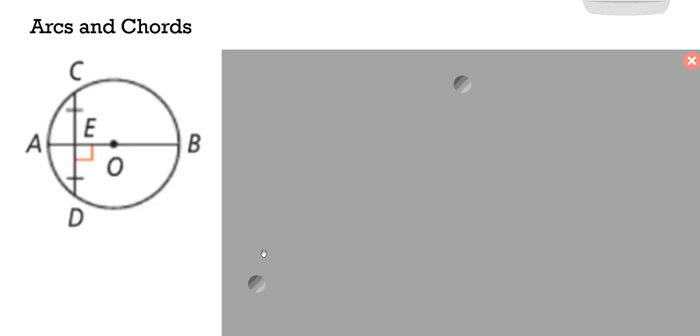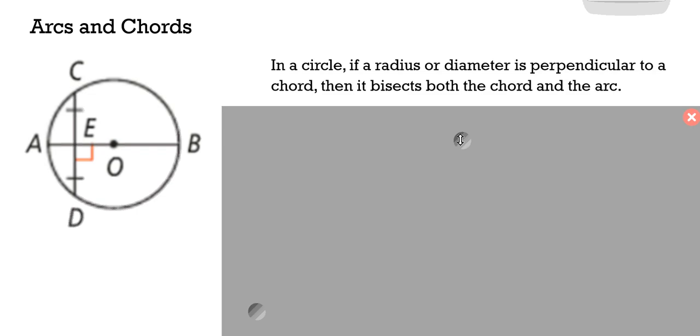When we're looking at this here, we've got a diameter AB and a chord CD. The diameter is a chord as well because its endpoints are on the circle, but because it contains the center, because it's the largest chord, we get to call it the diameter. What you notice here is when you have a chord like we do in CD, in a circle, if a radius or diameter is perpendicular to the chord, then it bisects both the chord and the arc.